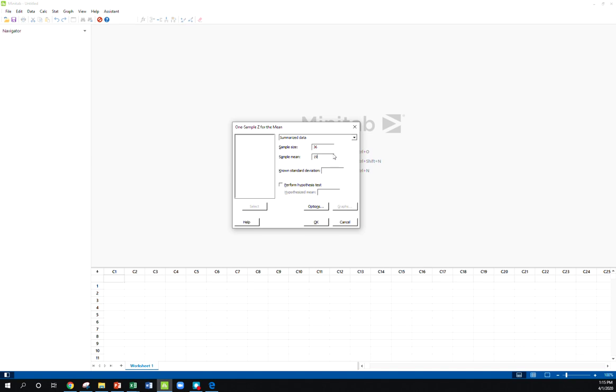Your sample mean, that was 19.39. The known standard deviation sigma was 3. We want a hypothesis test here, and our hypothesized mean was 20. By default, Minitab is going to set you up with a two-tailed test at alpha equal to 0.05. But remember, we were doing a left-tailed test.